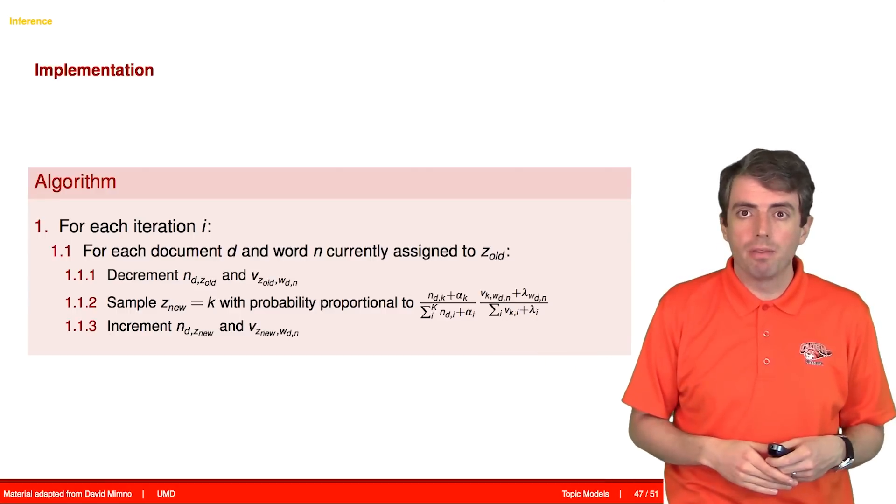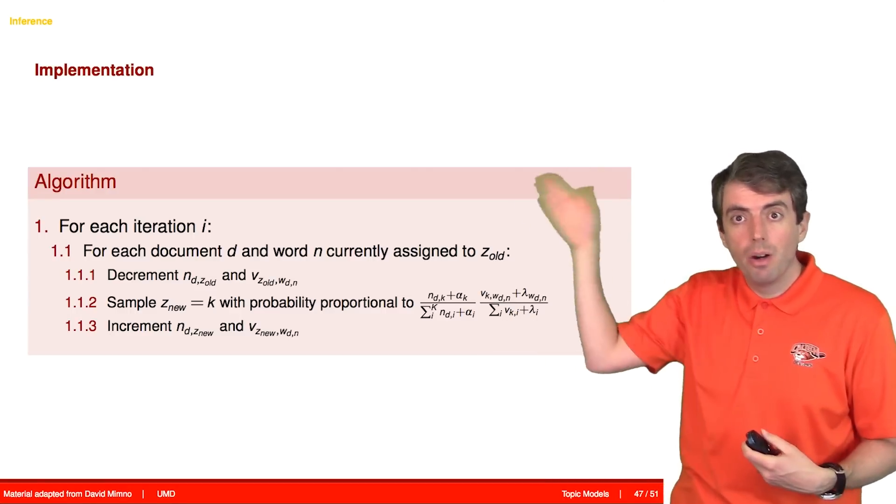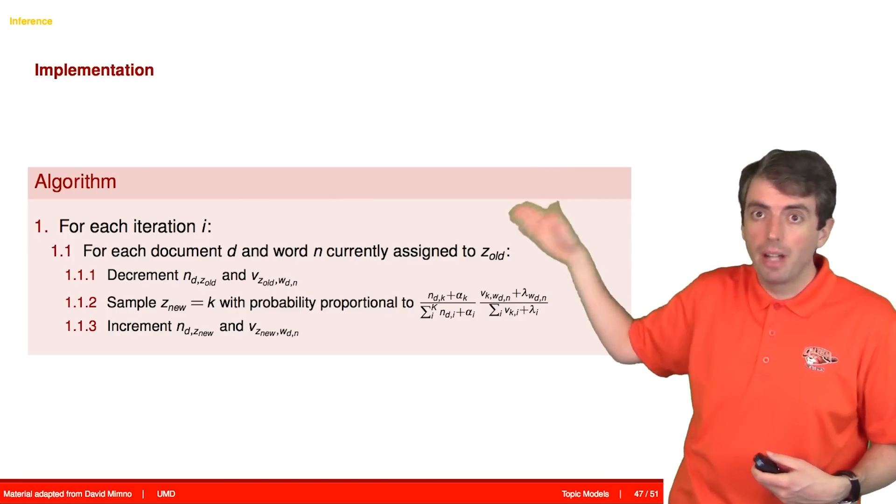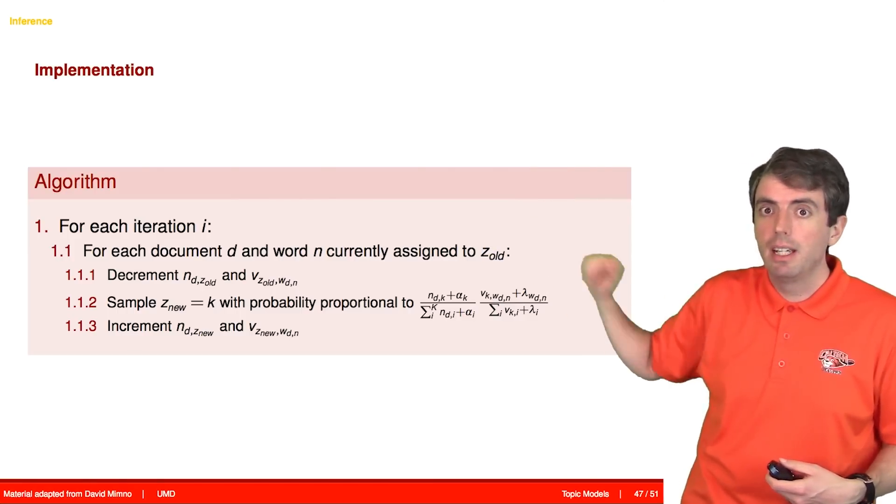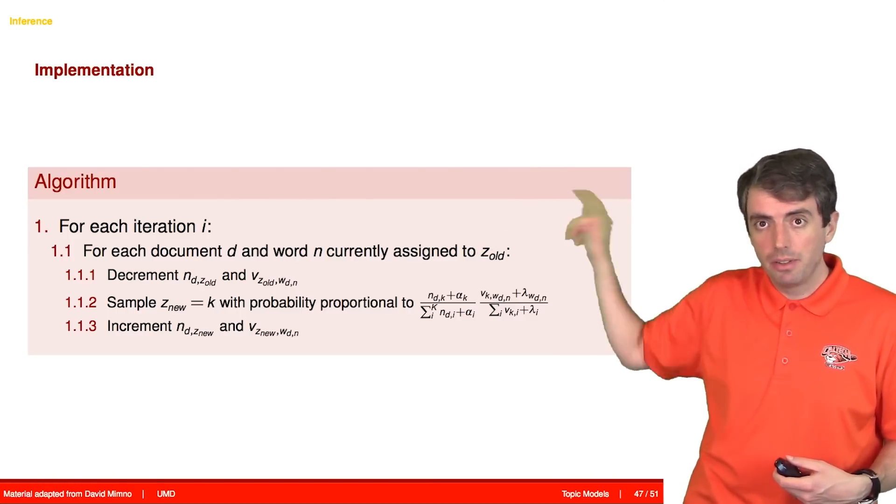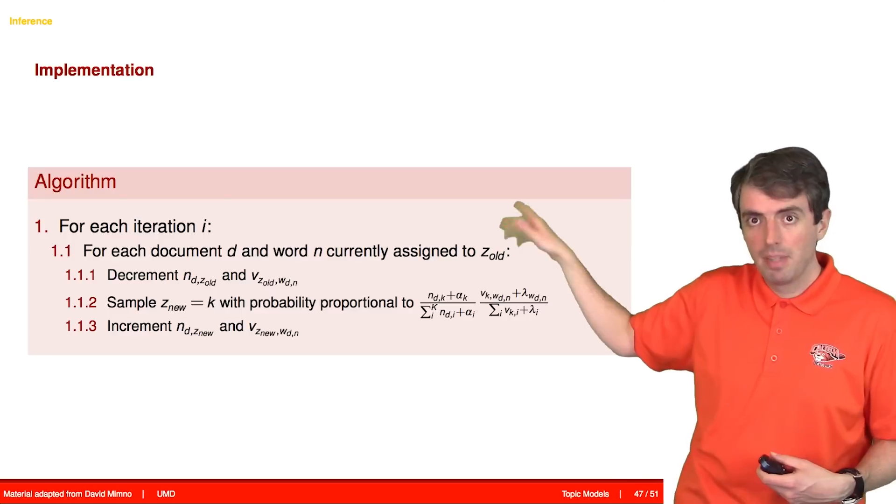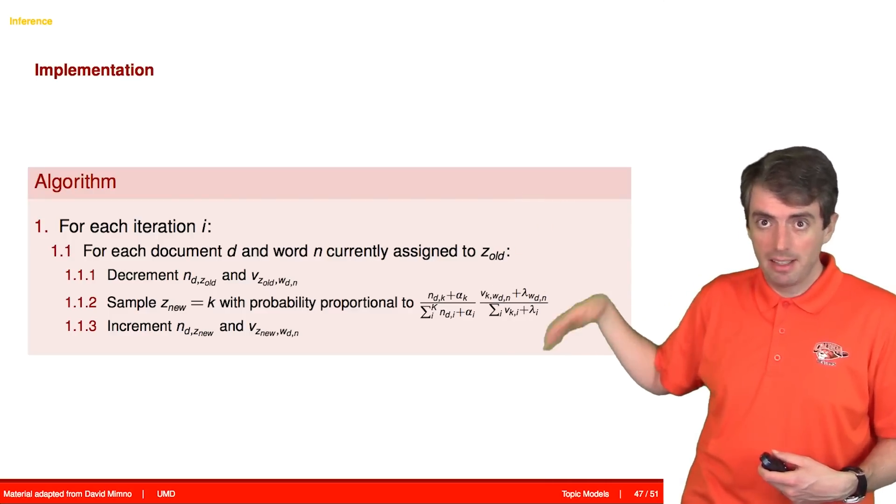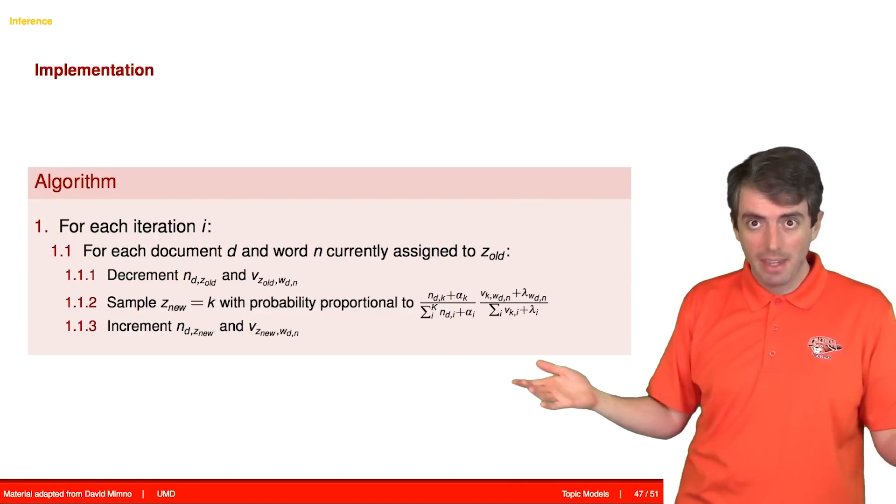And here it is written a little bit more formally. You go through all of your documents. You go through every word in every document. You decrement the variables associated with that topic assignment. You sample a new topic assignment, and then you increment the counts again. That's it.